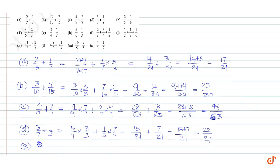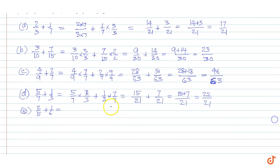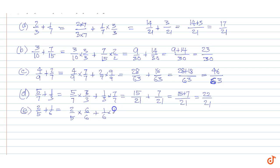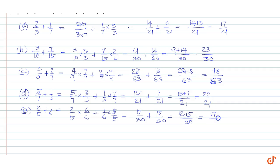Part e: 2/5 plus 1/6. Taking LCM as 30, we get 2/5 into 6/6 plus 1/6 into 5/5, equal to 12/30 plus 5/30, equal to 12 plus 5 divided by 30, equal to 17/30.